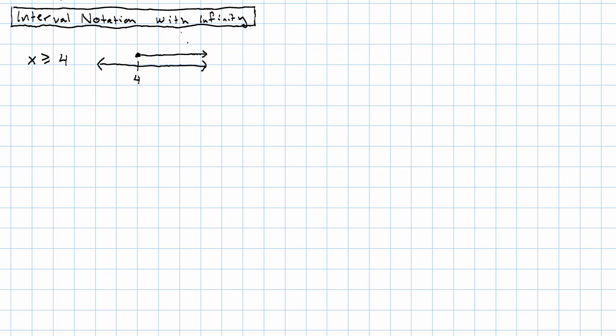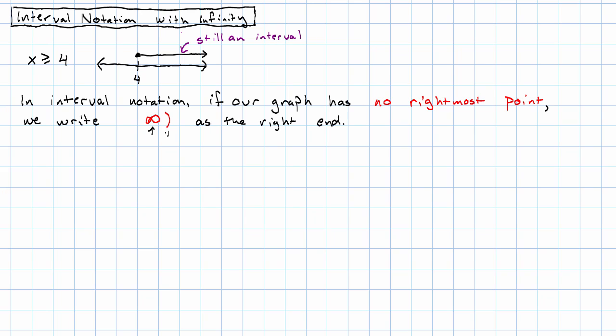But it turns out that this graph is still an interval. How can that be? How could we describe that using interval notation? In interval notation, if our graph has no rightmost point, we use this symbol followed by a round bracket as the right end.